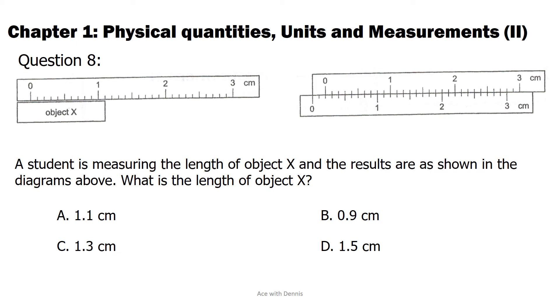The answer is C. 1.3 cm. From the second diagram, the zero error is negative 0.2 cm. From the first diagram, the reading is 1.1 cm. Hence the actual reading is 1.1 minus negative 0.2 cm. The answer is 1.3 cm.